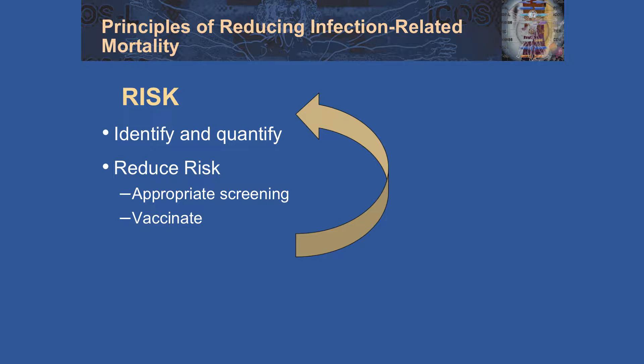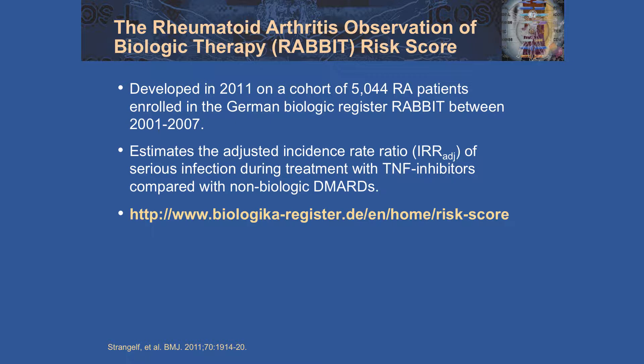This should be continuously readdressed every time we see our patients. I'd like to briefly talk about the RABIT Risk Score, which is a very nice clinical tool designed to aid in predicting risk of infection. It's an ongoing prospective cohort developed in 2011 on a cohort of 5,000 rheumatoid arthritis patients enrolled in the German biologic register, RABIT. It's a readily available tool — this link takes you to an easy-to-use website — and it's really nice for opening a conversation and dialogue with your patients about risk of infection when considering making treatment changes or escalating immunosuppression.